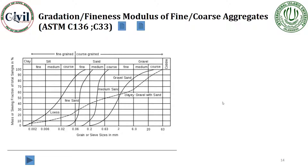Gradation is basically the arrangement of particle sizes in aggregates. The gradation curve is plotted between grain sizes on the x-axis and percent finer on the y-axis. In this particle size distribution plot, you can see portions of silt at particle sizes between 0.06 to 0.002 mm, and clay beyond 0.002 mm. This lecture is specific to concrete, so we use sand and gravel with particle sizes between 0.06 and 2 mm.